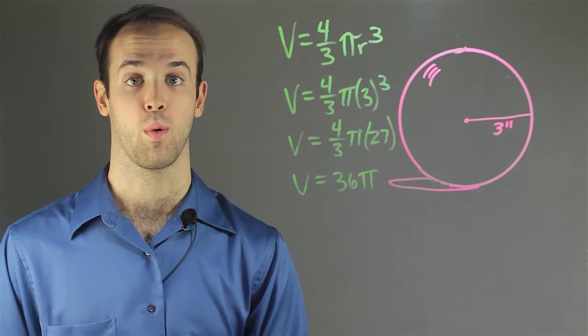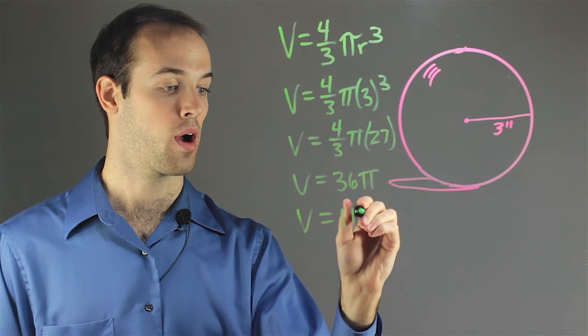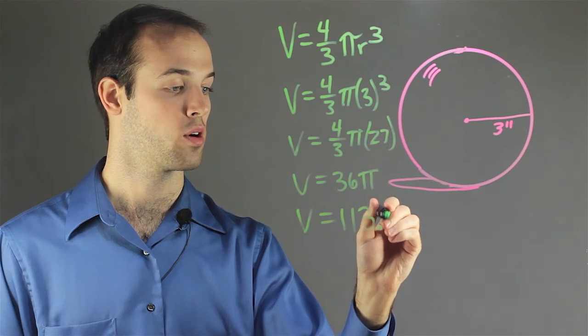And then I plug in 3.14 as an approximation of pi, and I get the volume is equal to approximately 113.04.